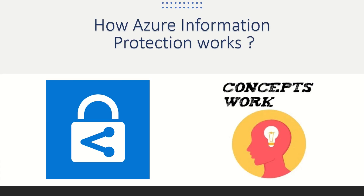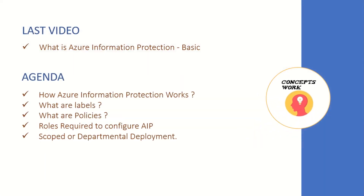Hi guys, hope you're all doing well and welcome back to our series of Azure Information Protection. In this video, I'm going to talk about how Azure Information Protection works. If you're watching this series from the beginning, in the last video we discussed data classification and rights management service — foundational concepts related to AIP. In this video I'll cover what labels are, what policies are, and which role is required to make changes in the AIP console.